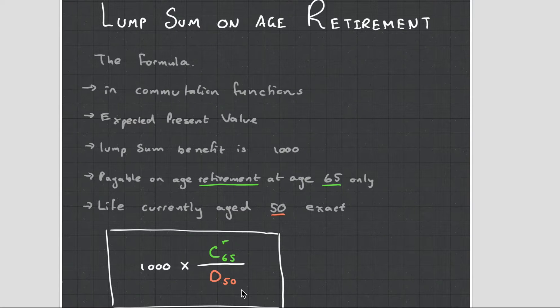The lump sum benefit is 1000. I've got that there, that can be any value. I was using 1000 for simplicity. It's payable on age retirement at age 65 only. So this is a very important statement. If I retire at age 64, I'm not going to get 1000 rand. If I retire at age 66, I'm not going to get 1000 rand. I'm only going to get 1000 rand in this situation if I retire at age 65. So you can see that already this is a very simplistic retirement package.